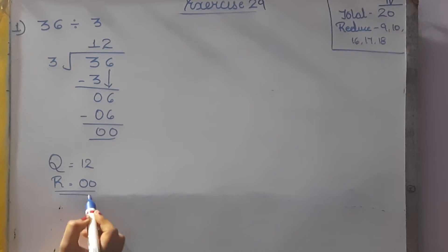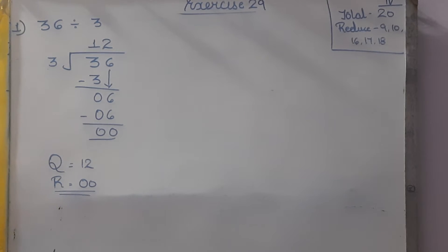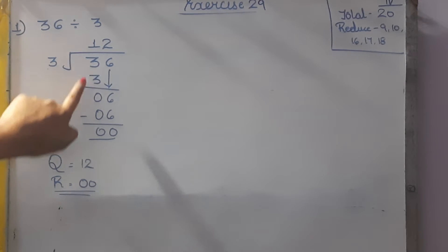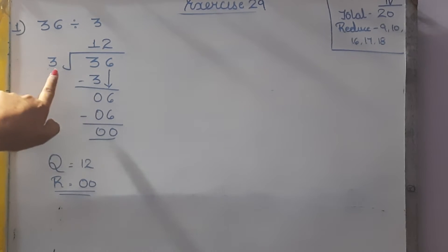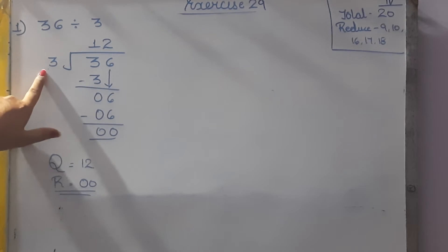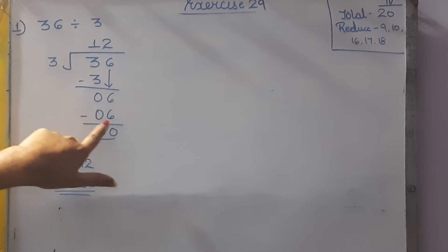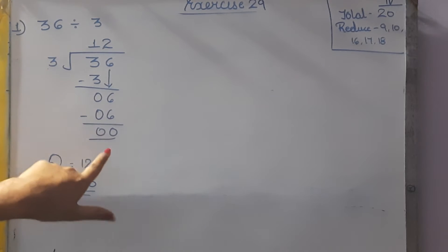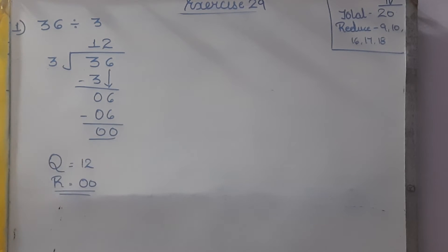As the remainder is not asked in the question, I am explaining it for clarity. 3 ones are 3, 3 minus 3 is 0. Bring down 6. In the table of 3, 3 twos are 6, so the remainder is 0.